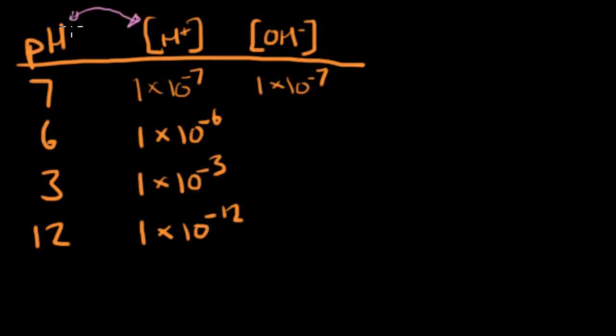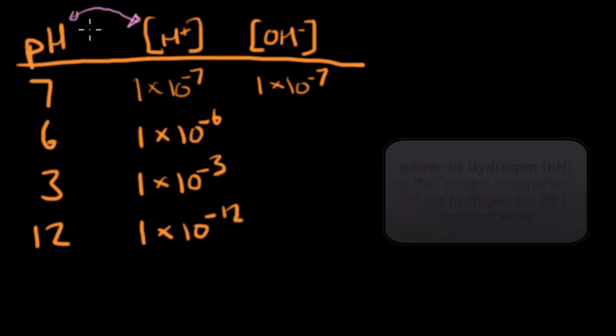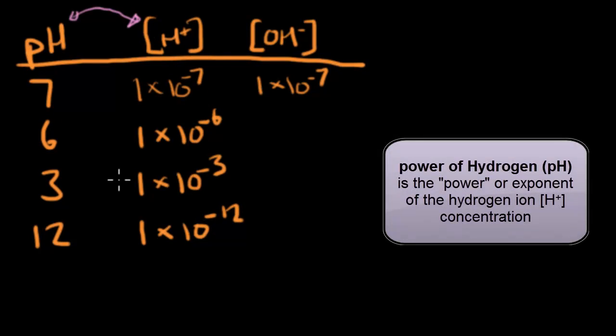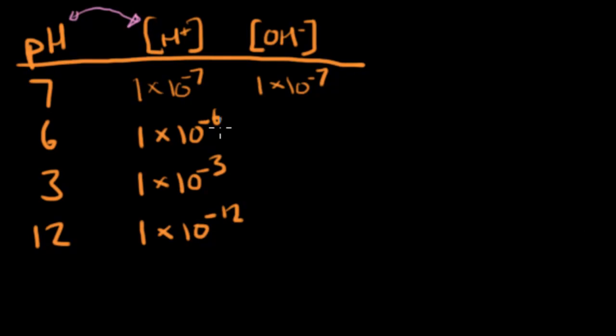So that's actually where the pH numbers come from. They're describing the concentration of hydrogen ions directly, but they're just making it an easier to write form. Instead of constantly writing out 1 times 10 to the negative 7th, you can just write 7. So the power of hydrogen, pH, is really just the power, or exponent, of the concentration.